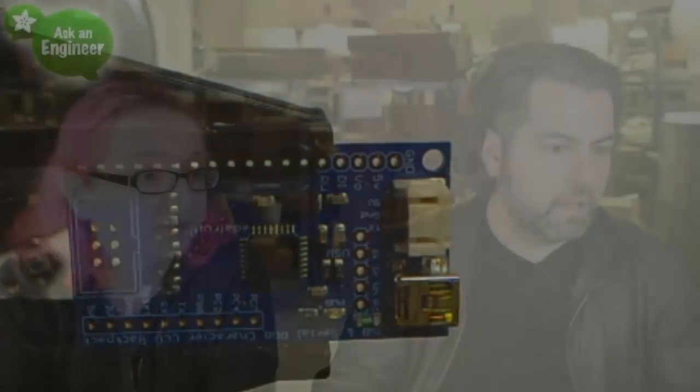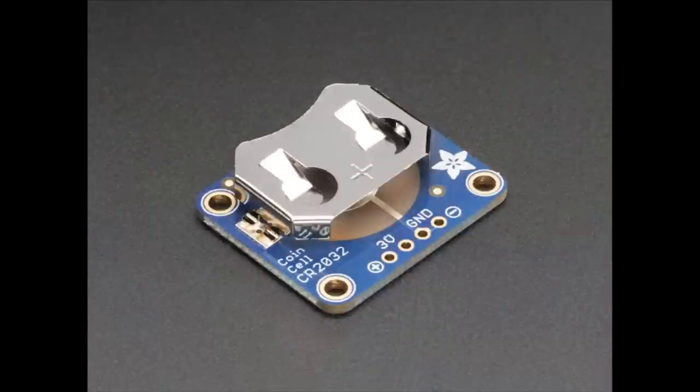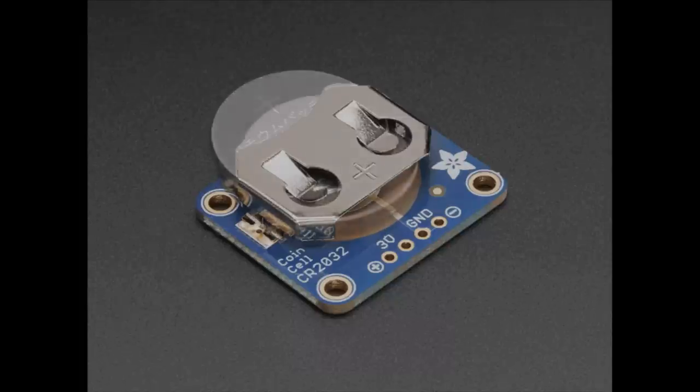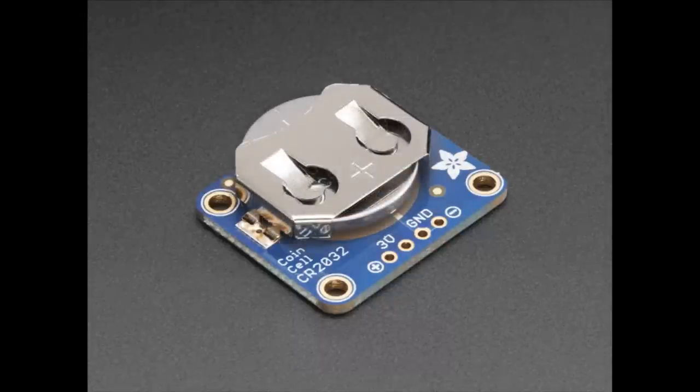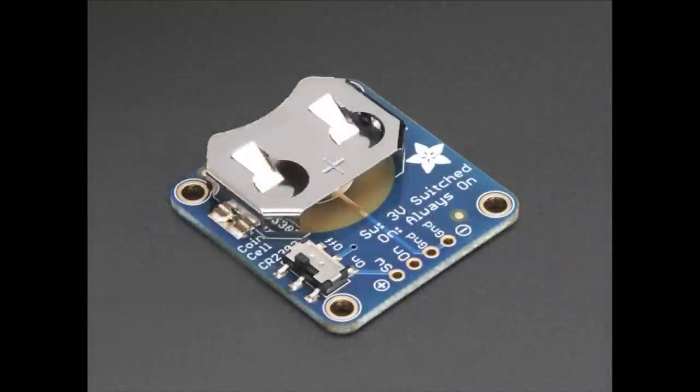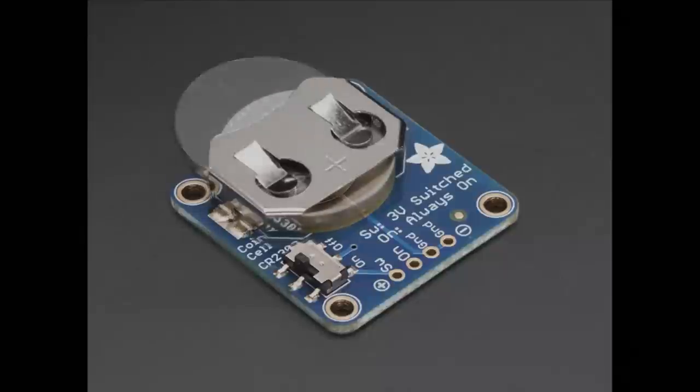Next up, we have, okay last week we had the 12mm coin cells and now we have the 20mm. And you did the same thing, I like your style. Here's one without a switch. Maybe you don't need a switch. And then you have one with a switch. So this is the 20mm one with and without switches.